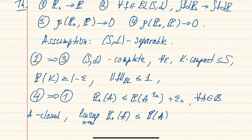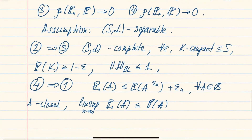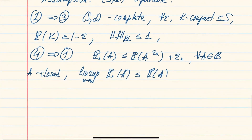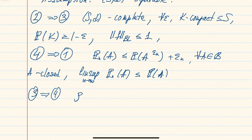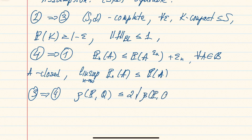So P_n converges to P weakly. The only remaining step is the implication from three to four, for which we prove a direct comparison between the two metrics: the Lévy-Prokhorov metric is less than or equal to twice the square root of the bounded Lipschitz metric.